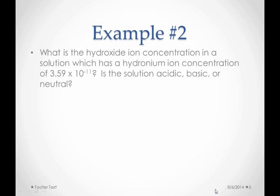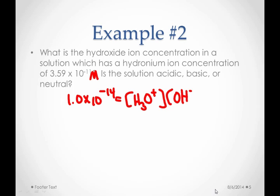Let's try a second example. What is the hydroxide ion concentration in the solution, which has a hydronium ion concentration of 3.59 times 10 to the negative 11th molar. Is the solution acidic, basic, or neutral? Again, we need KW and the relationship between hydronium ion and hydroxide ion. And I see that I've been given my hydronium ion concentration right here, so I can just plug it in to the equation and solve for hydroxide.